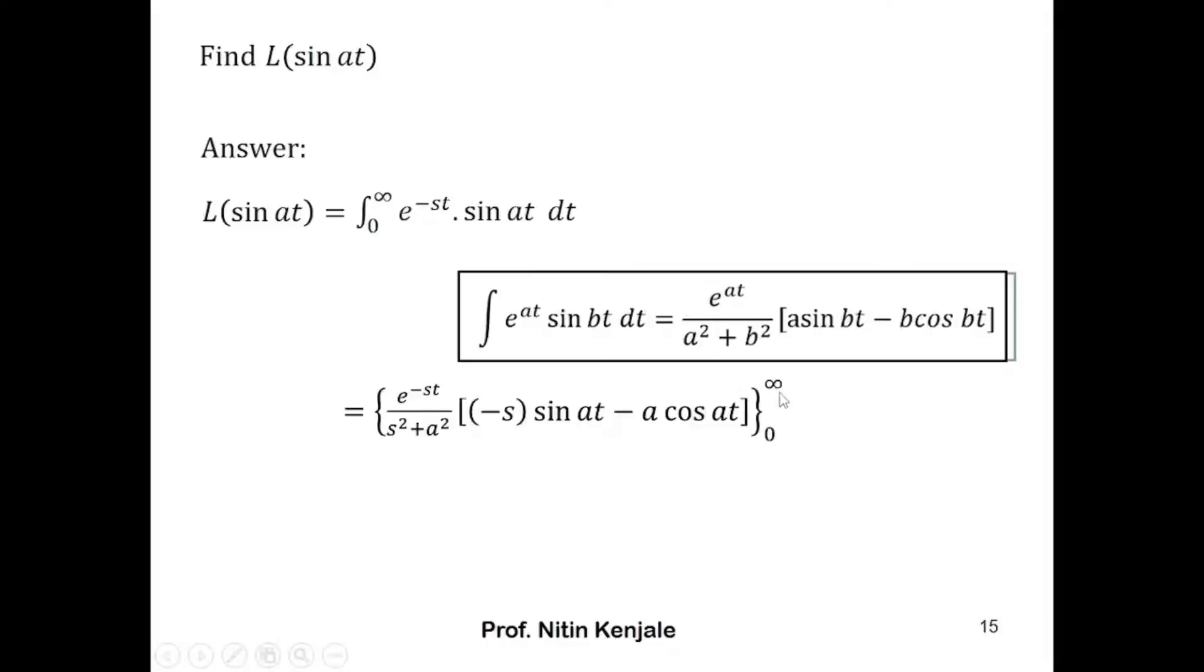When we put these limits in t, we get: when I put infinity in t, we have e raised to minus infinity, which is zero. Now when we put zero in t, we will have e raised to zero, that is one upon s squared plus a squared.